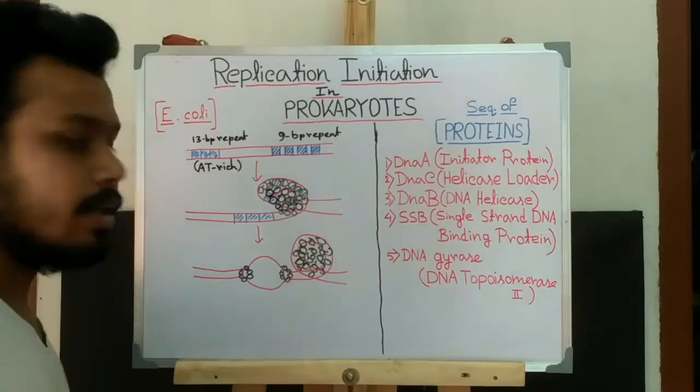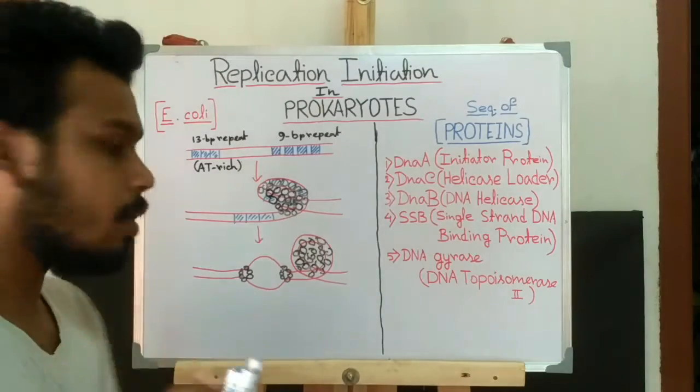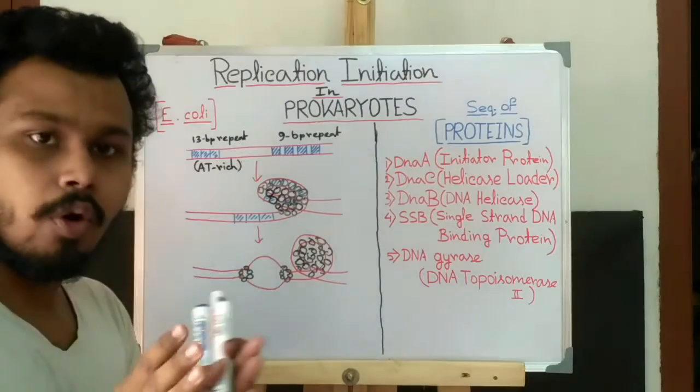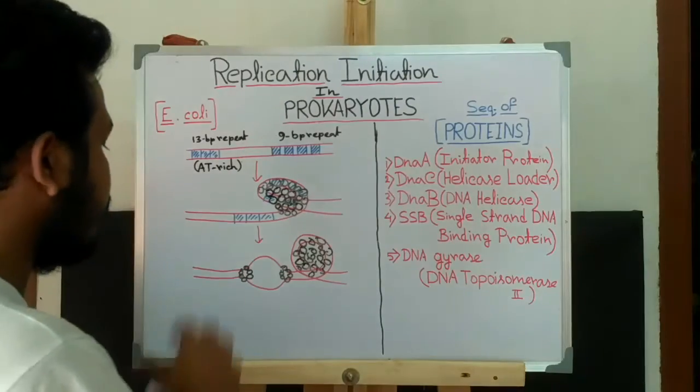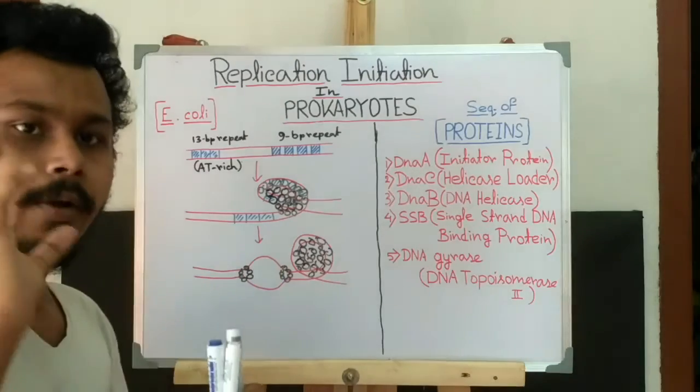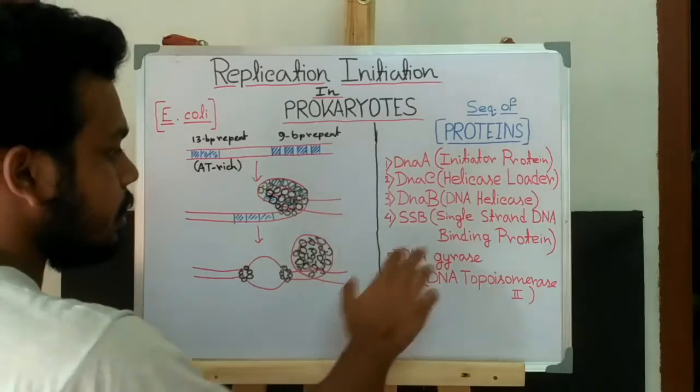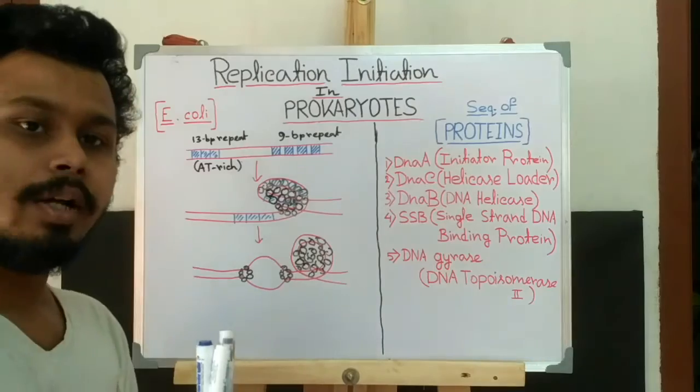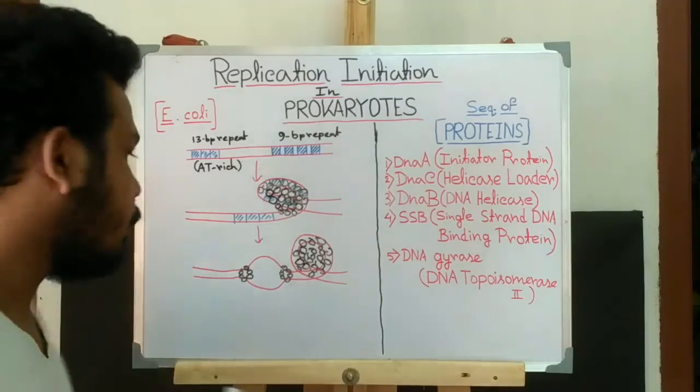And this positive supercoil prevents the DnaB from going further. And this stress is removed by DNA gyrase. DNA gyrase comes and removes the positive supercoil from the DNA, and then again DnaB goes ahead to unwind the DNA strands.